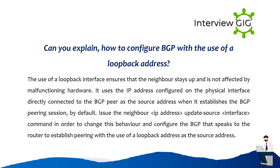Can you explain how to configure BGP with the use of a loopback address? The use of a loopback interface ensures that the neighbor stays up and is not affected by malfunctioning hardware. By default, it uses the IP address configured on the physical interface directly connected to the BGP peer as the source address when establishing the BGP peering session. Issue the neighbor IP address update-source interface command to change this behavior and configure BGP to establish peering using a loopback address as the source address.